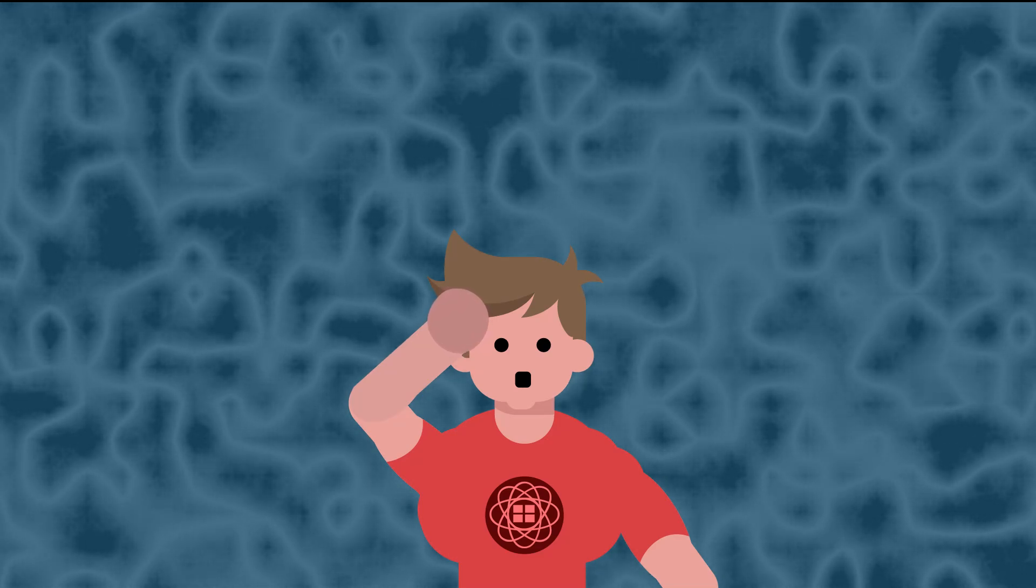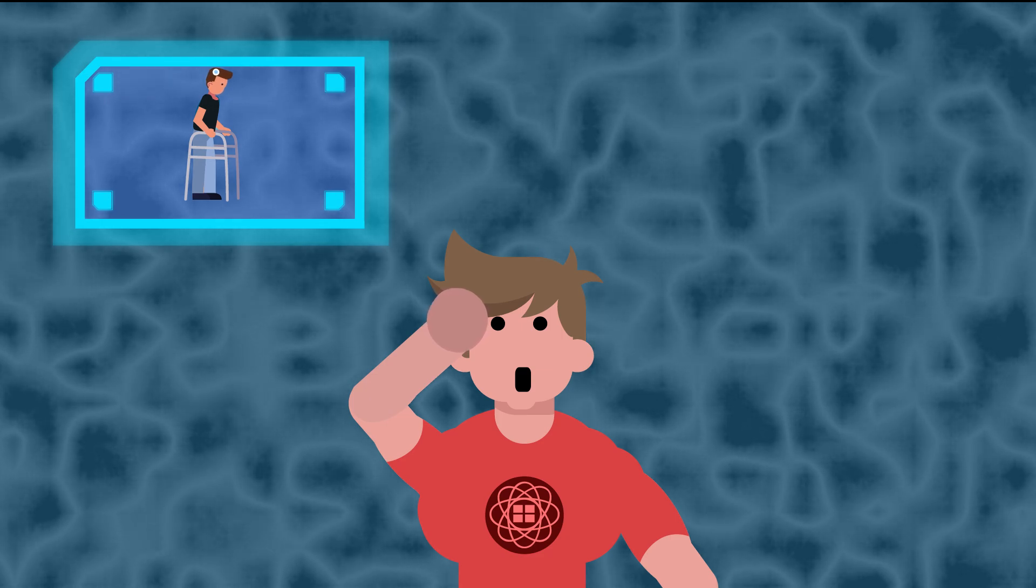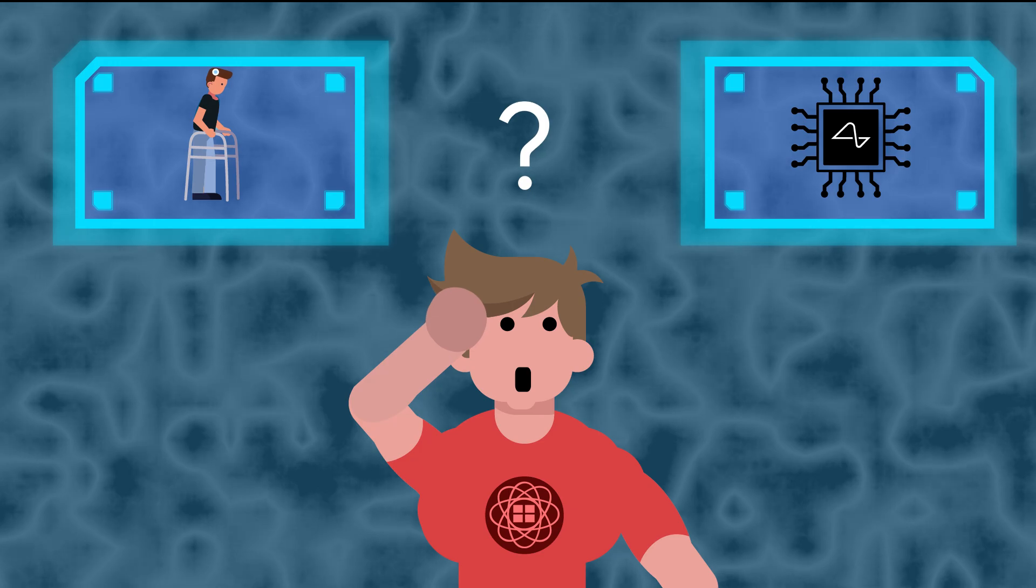If you've been paying attention to the news, you may have heard about a paralyzed man being able to walk again thanks to brain implants or Neuralink's brain chips. But how exactly do these implants work?